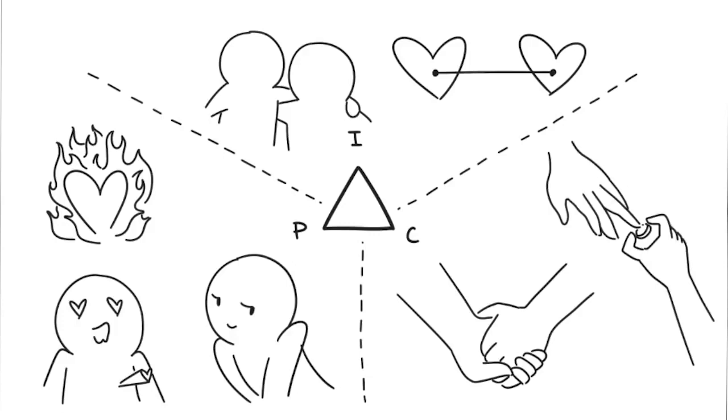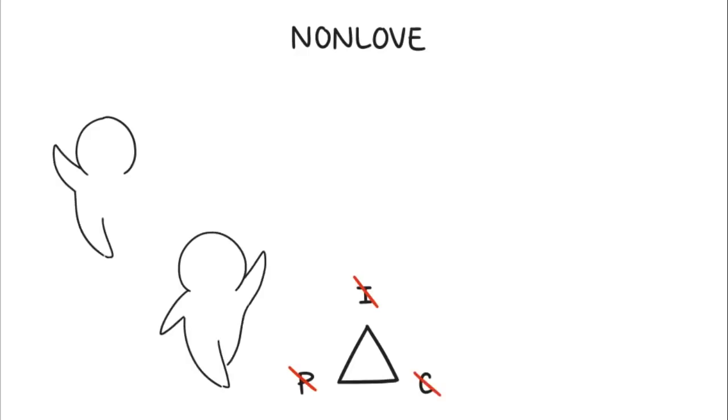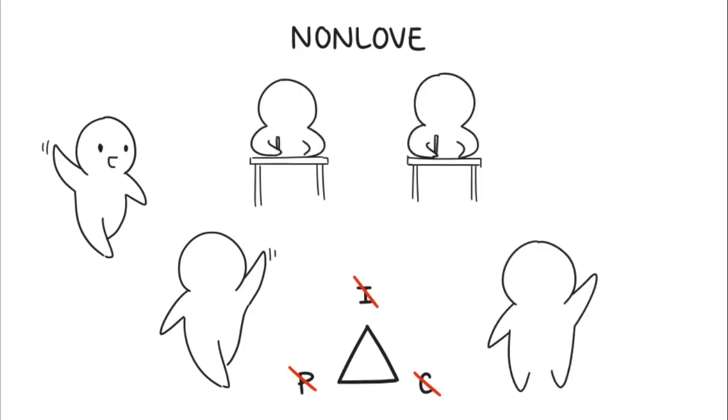According to Sternberg's theory of love, there are six forms of love, which are combinations of the three components previously described. One: Non-love. Non-love is merely the absence of all three components. This basically characterizes the majority of our personal relationships, which consists of simple, casual interactions. It could apply to your acquaintances or people you're not particularly attached to.